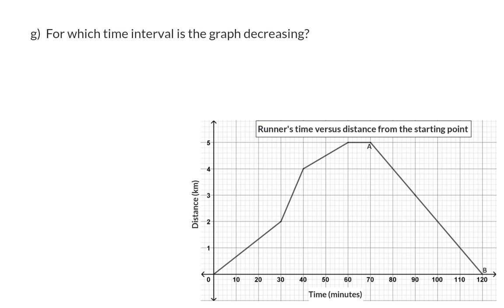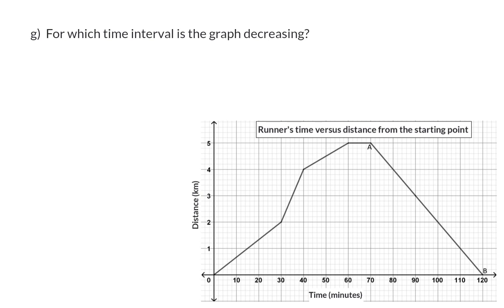Question G: For which time interval is the graph decreasing? On a graph, decreasing means as we read from left to right, the graph is moving downwards, and that will be the interval from 70 to 120 minutes.